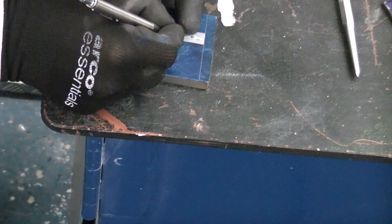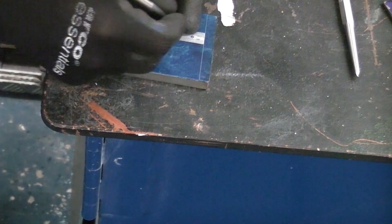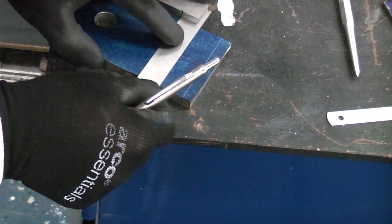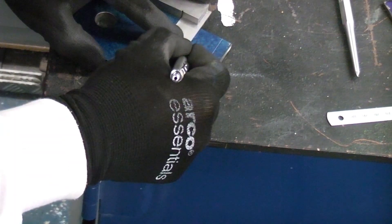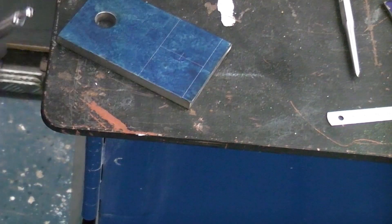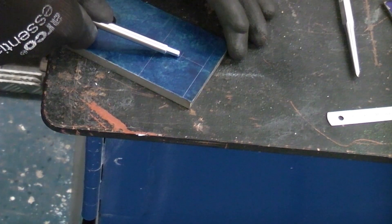So I'm now going to put a mark at 20mm. I'm just going to put a small line across there. And where those two lines intersect we're going to center punch.